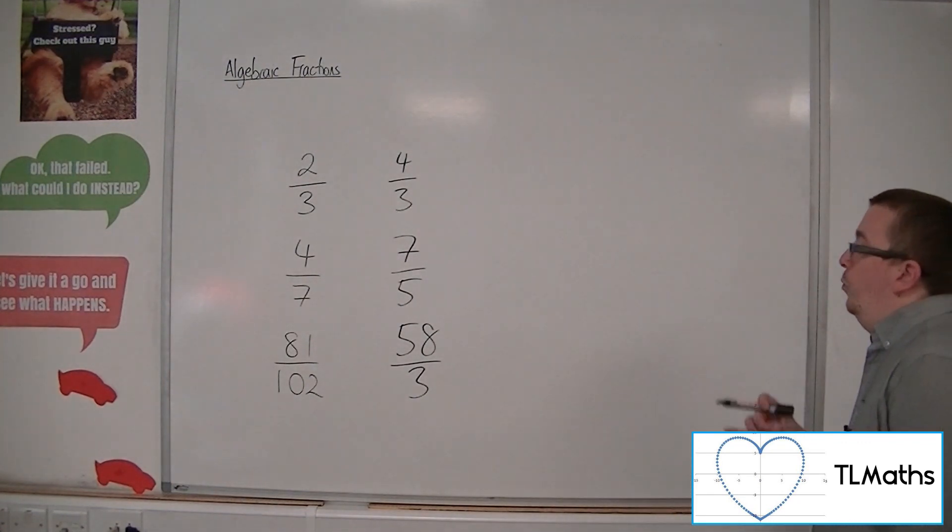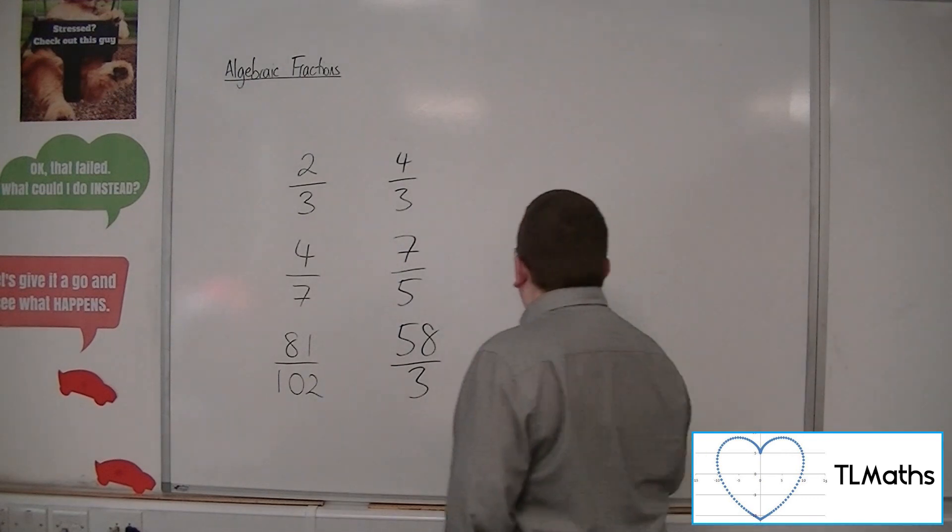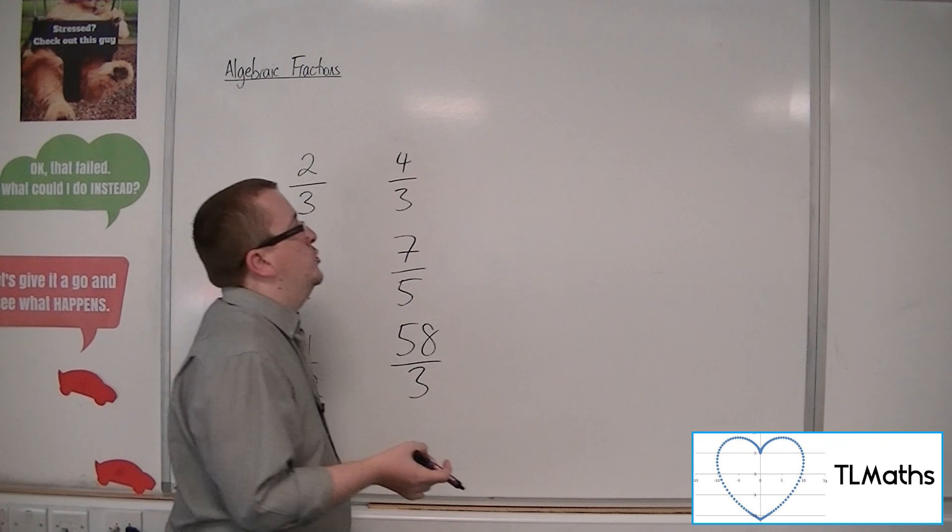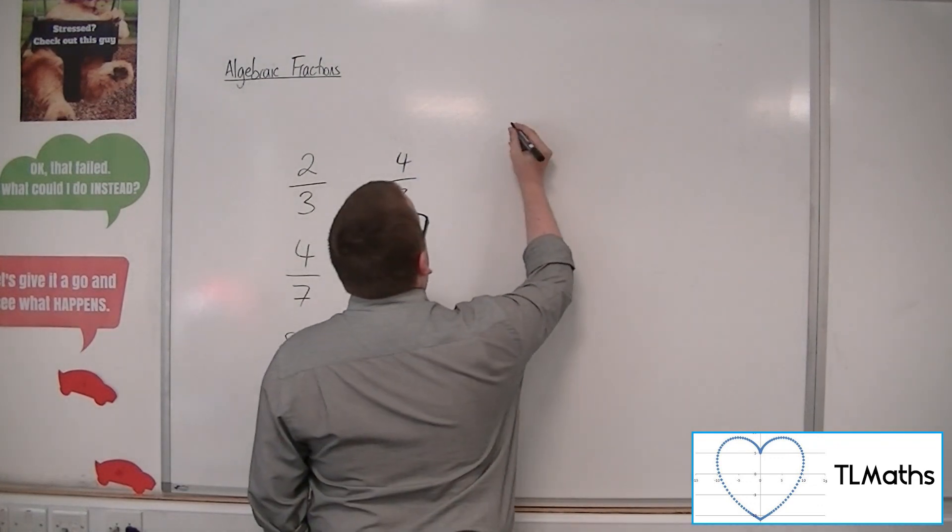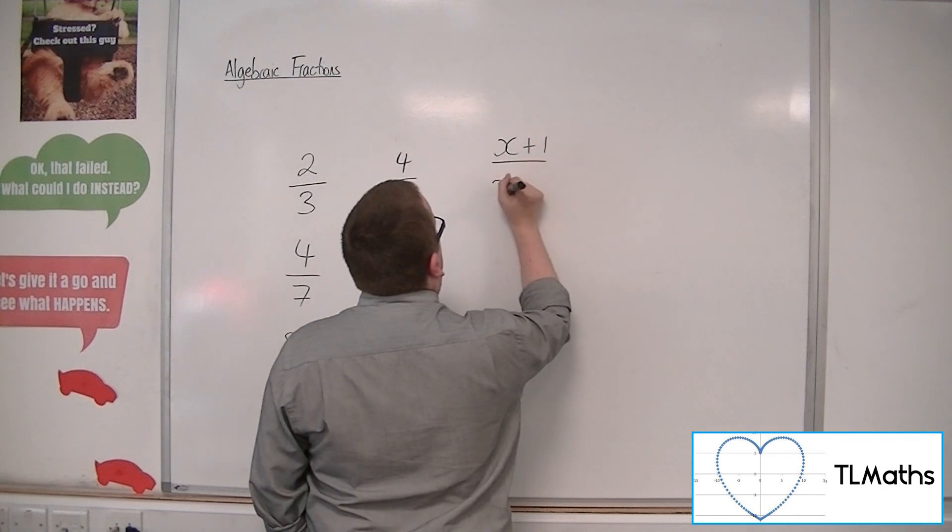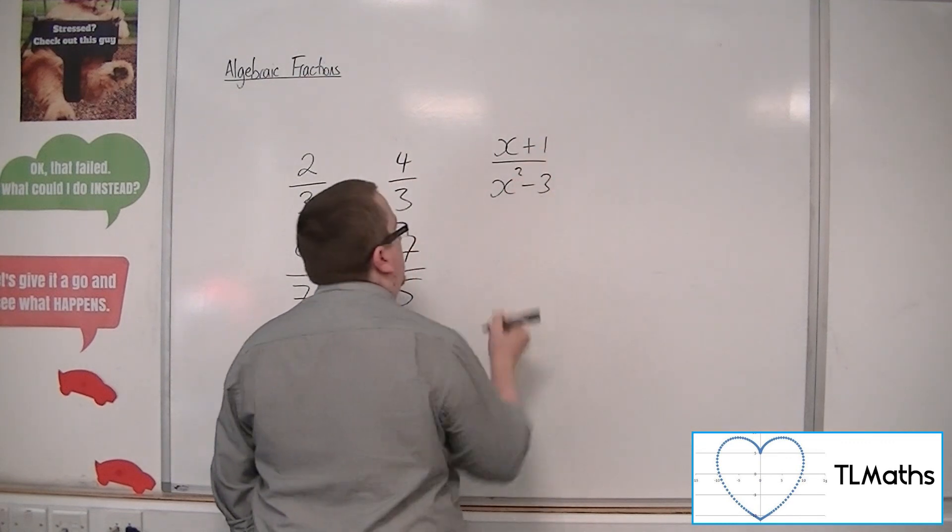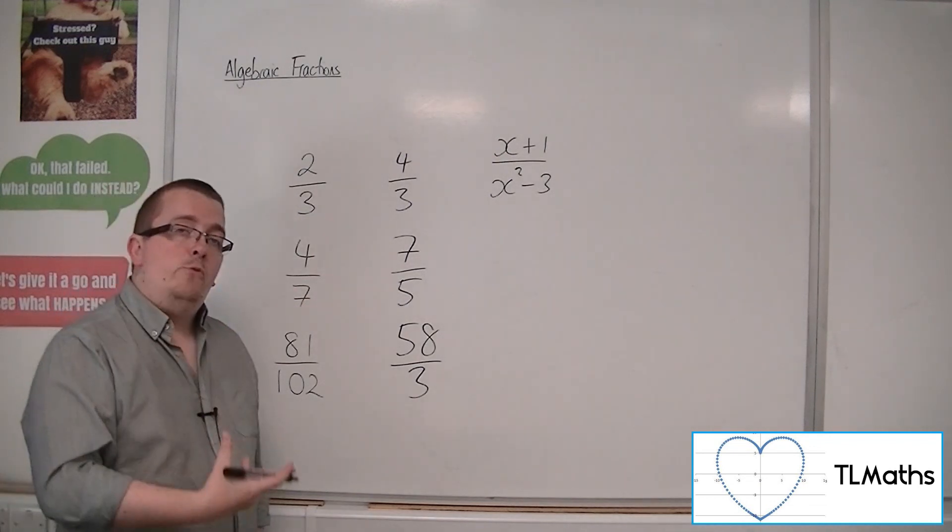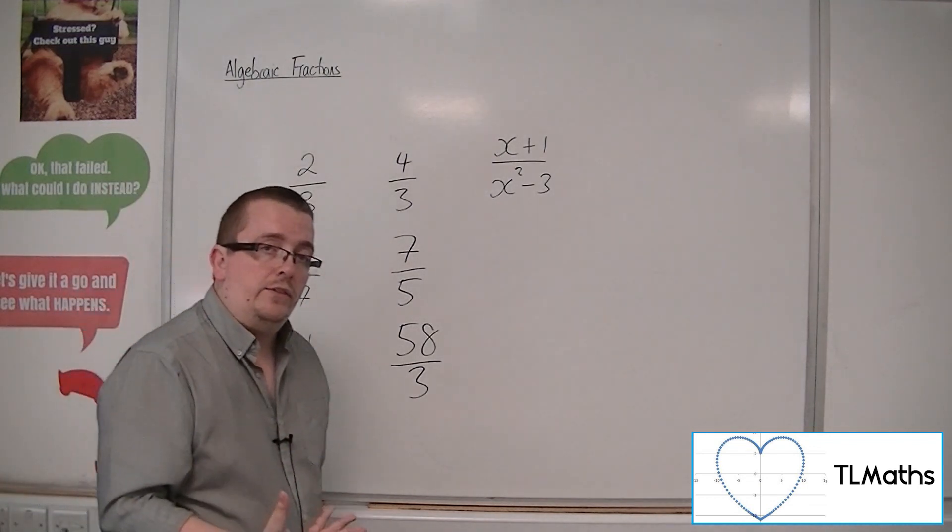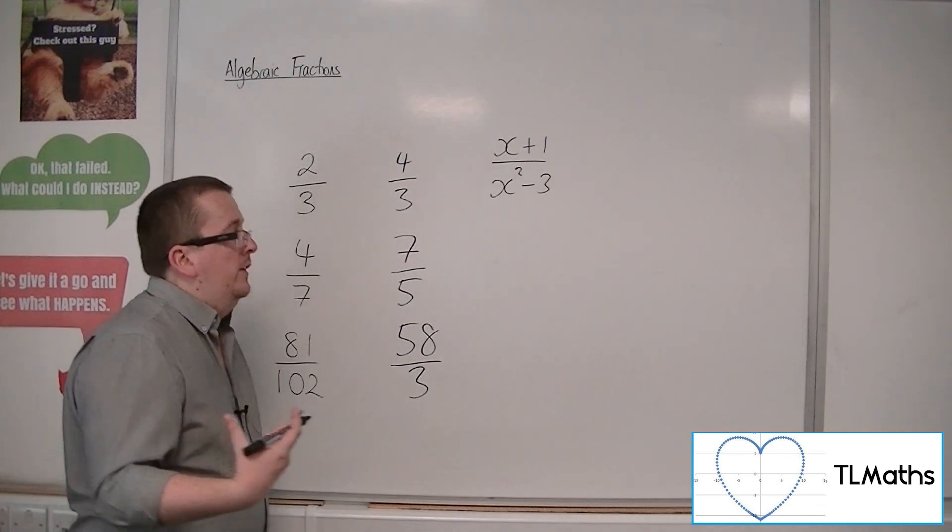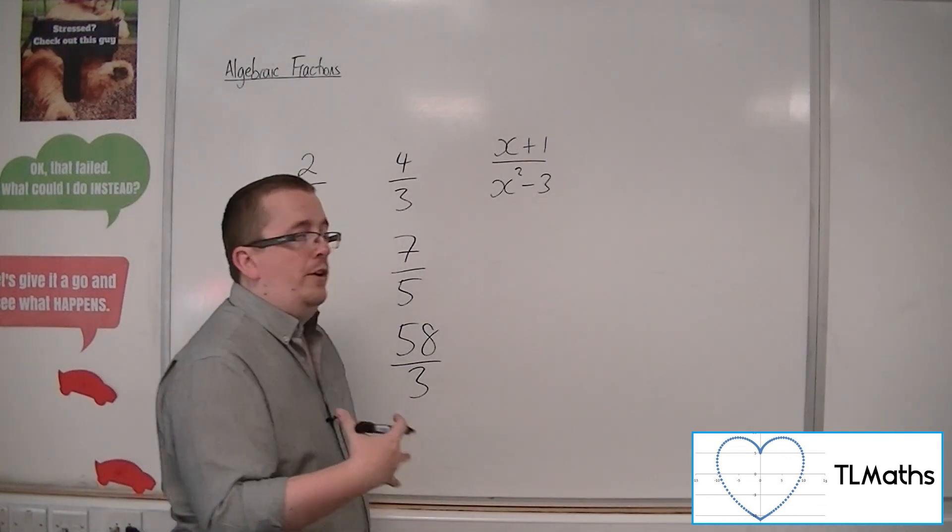What we would consider to be a proper fraction for algebraic fractions would be something like (x + 1) over (x² - 3), for example. That would be a proper fraction because the largest power of x is in the denominator. That will really identify it for you.